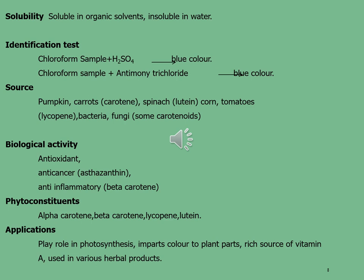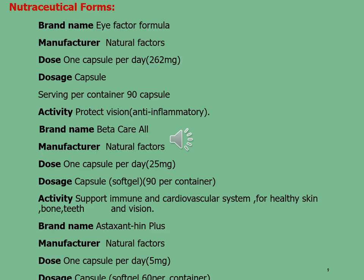Common sources of carotenoids are pumpkin, carrots, spinach, corn, tomatoes, bacteria, and fungi. Some phytoconstituents with biological activities — antioxidant, anti-cancer, and anti-inflammatory — include alpha-carotene, beta-carotene, lycopene, and lutein. Carotenoids play an important role in biosynthesis, impart colors to plants, are a rich source of vitamin A, and are used in various herbal products.